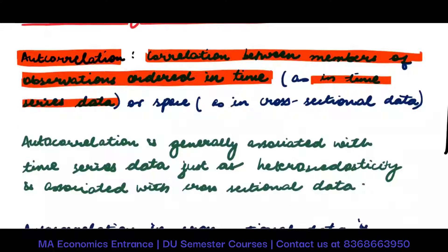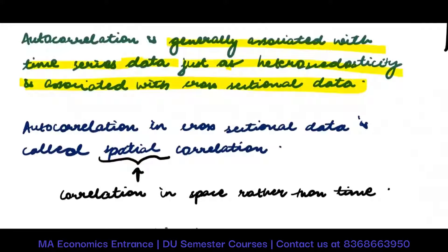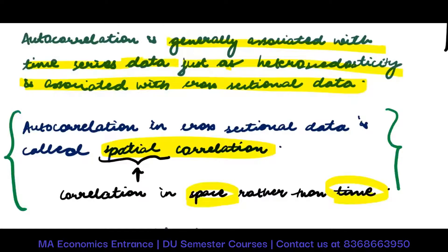Autocorrelation is generally associated with time series data, just as heteroscedasticity is associated with cross-sectional data. Autocorrelation in cross-sectional data is called spatial autocorrelation or spatial correlation, because it is in space rather than time — but this is a very rare thing and will not appear in this curriculum.